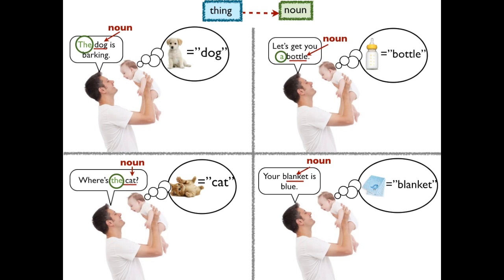And now she can use that to identify nouns that don't refer to objects, such as 'destruction' — which we already mentioned — but also 'truth,' 'justice,' and 'the American way.' So she notices that we talk about 'the destruction,' and so 'destruction' is a noun.